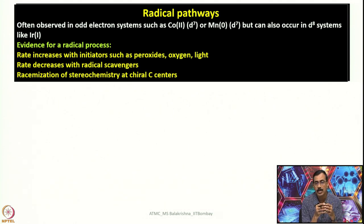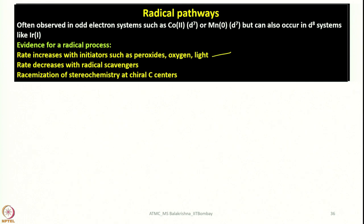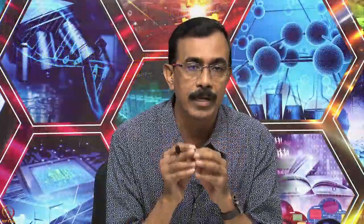If the reaction shows ambiguity about the pathway followed, we perform the following experiments. We check whether the rate increases with initiators such as peroxides, oxygen, or light. If radical scavengers are added, the rate should decrease. Furthermore, if the reaction follows a radical pathway, racemization of stereochemistry at a chiral carbon center will be exclusively observed. These three indicators tell us which path a particular molecule follows.